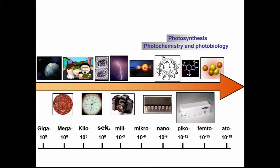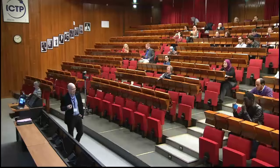Entering the realm of microscale — subcellular structures, large molecules — the tools that can follow events on microsecond and nanosecond timescales are electronic devices. A fast oscilloscope gives you one gigahertz resolution; the clock in your mobile phone processor is about one and a half gigahertz, corresponding to about one nanosecond. But the interesting bits in physical chemistry and biology happen on even shorter timescales. When you get to molecules and electrons in molecules, the only thing fast enough to follow their dynamics is light itself.